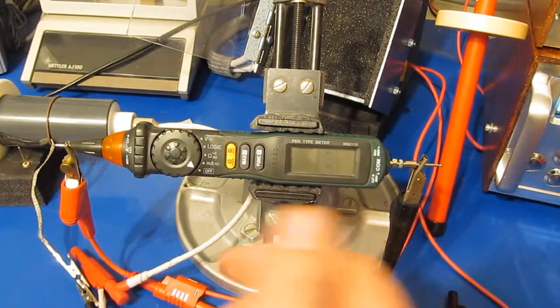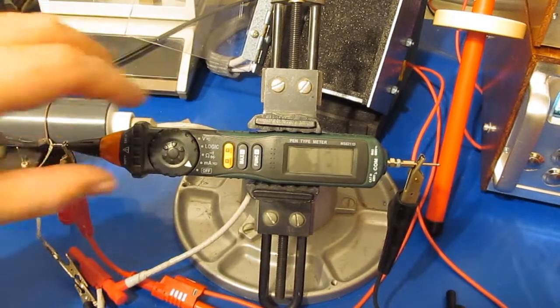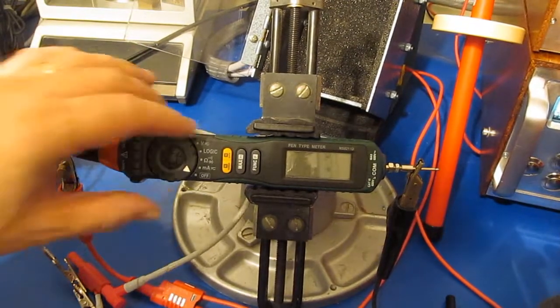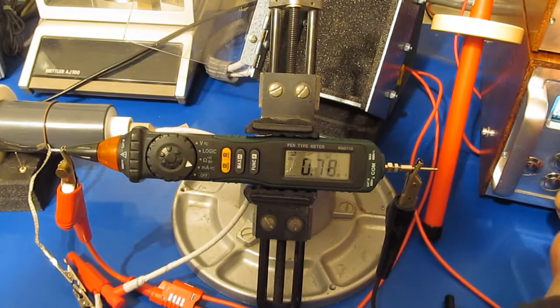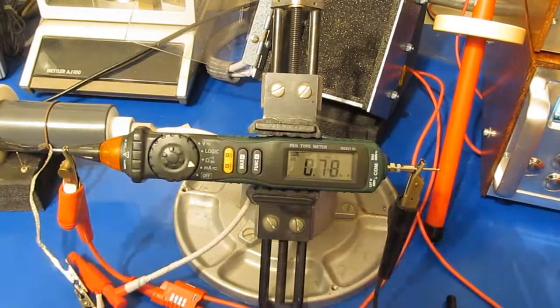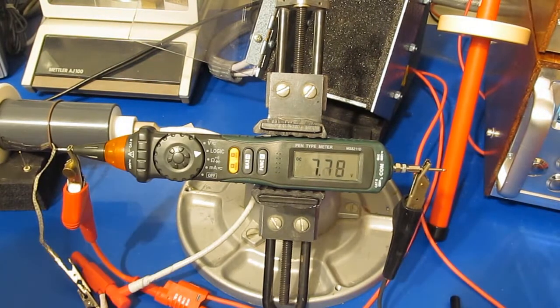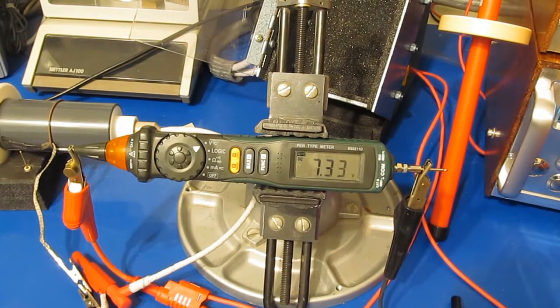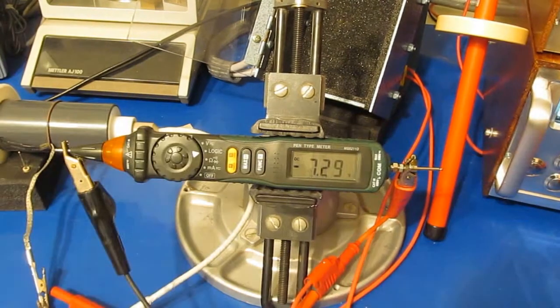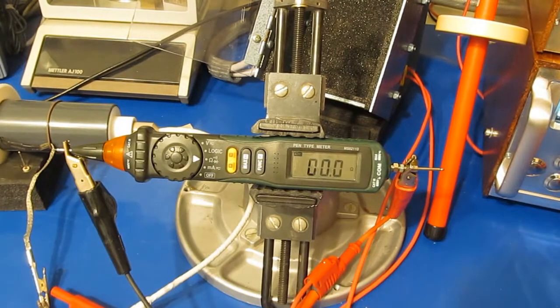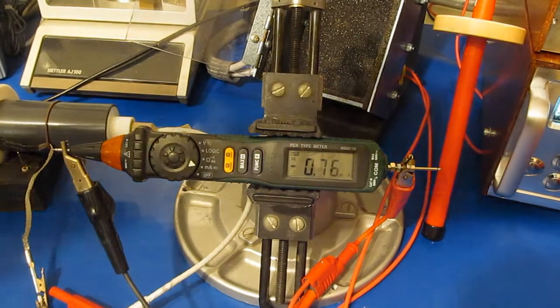Then we'll go ahead and reverse the two leads. Again this will be 5 transients in each mode. 1000 volts, 2 ohm source impedance, 100 microsecond full width half height. Alright that's it.